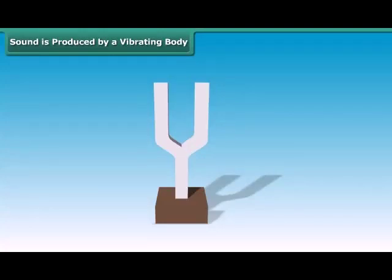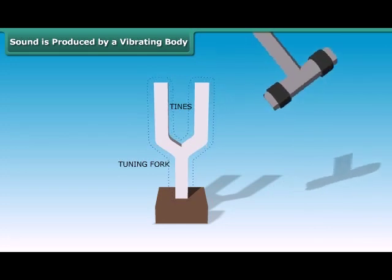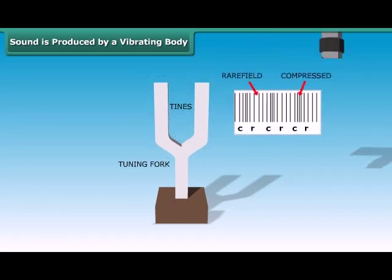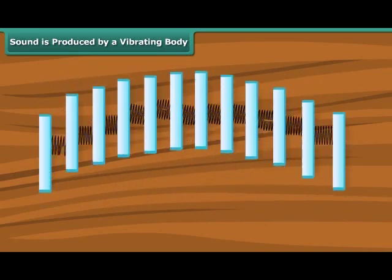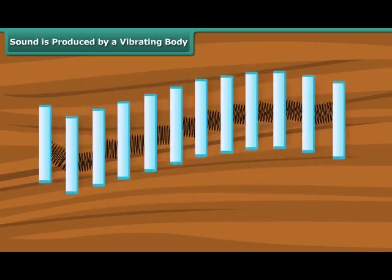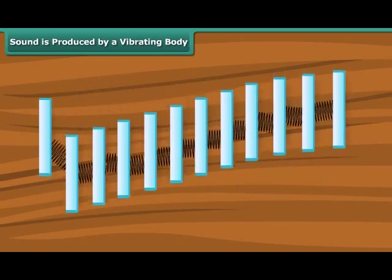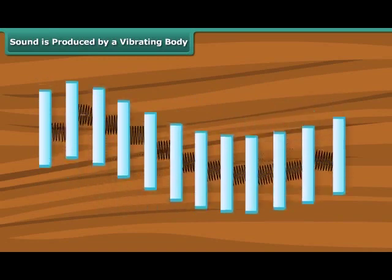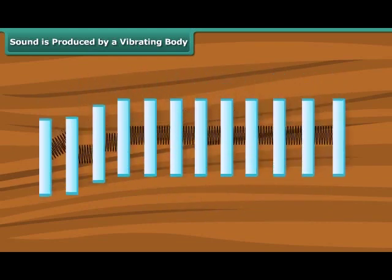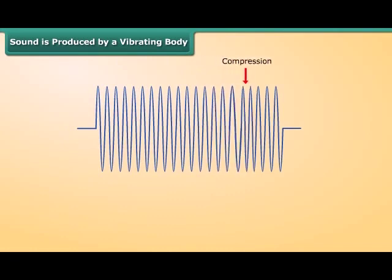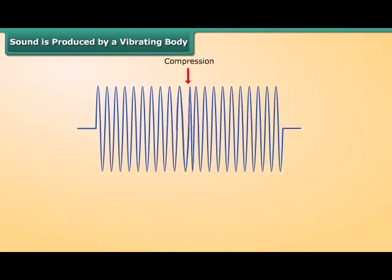Sound is produced by a vibrating body. Sound is a pressure distribution that moves through a medium in the form of mechanical waves. When a force is exerted on an atom, it moves from its rest or equilibrium position and exerts a force on the adjacent particles. These adjacent particles are moved from their rest position, and this continues throughout the medium. This transfer of energy from one particle to the next is how sound travels through a medium. The term mechanical wave describes the distribution of energy through a medium by the transfer of energy from one particle to the next. Sound waves that travel parallel to the direction of particle movement are called longitudinal waves.